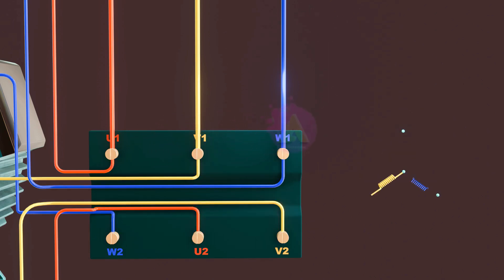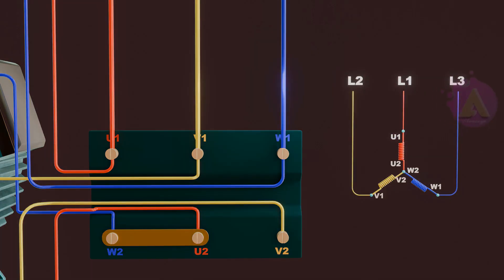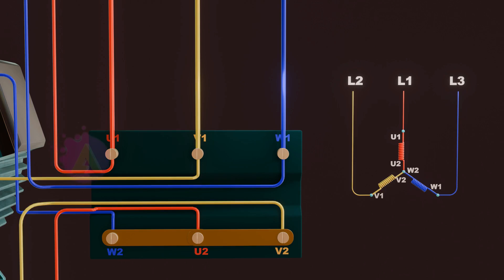The other way we can connect the terminals is using star connection configuration. In this method we connect W2, U2, and V2 on only one side. This will give us star connection. In this case when electricity passes, the electrons are shared between the phases.